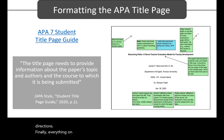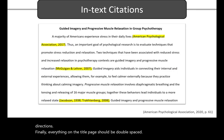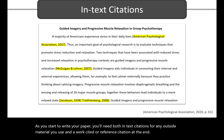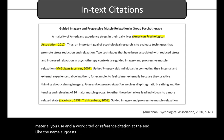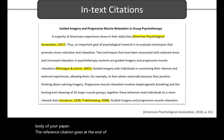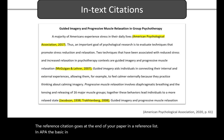Finally, everything on the title page should be double-spaced. As you start to write your paper, you'll need both in-text citations for any outside material you use, and a works cited or reference citation at the end. Like the name suggests, the in-text citation goes within your written text — it's part of the body of your paper. The reference citation goes at the end of your paper in a reference list. In APA, the basic in-text citation is author-date, which is the author's last name and the year of publication.